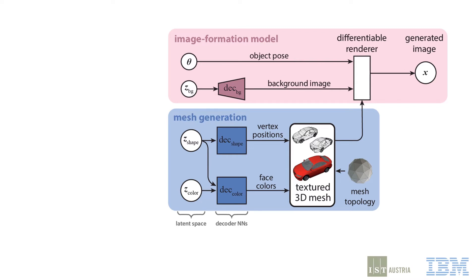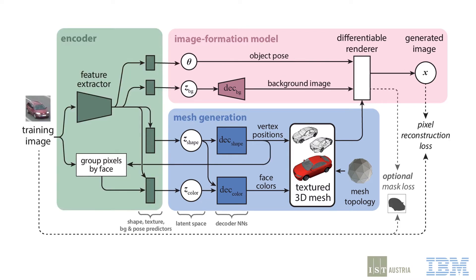We train this model like a variational autoencoder. That is, we add an encoder CNN that predicts the latent variables which explain a given image. Then, we optimise the encoder and decoders together end-to-end. We maximise a variational bound on the training data likelihood. This loss requires that the rendered image match the original, and that the latent variables match the Gaussian priors we impose on them.